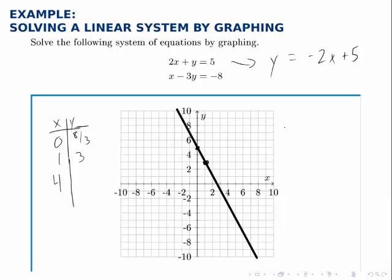If x is 4, we have 4 minus 3y equals negative 8. Subtracting 4 from both sides, we have negative 3y equals negative 12. And then dividing both sides by negative 3, we have y equals 4. So the point (4,4) is up here. And connecting those two points, we can draw the second line.